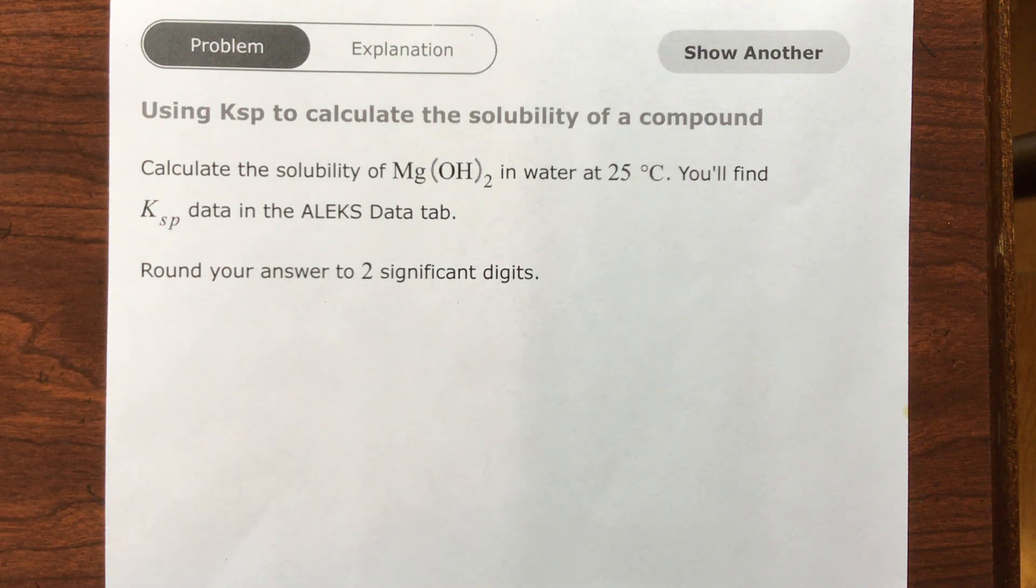Ksp is the solubility product constant, and it's an equilibrium constant. So at equilibrium, how much of this powder that you're putting in the water is actually going to dissolve into its ions, and how much is going to remain as a solid? That's what you're being asked.